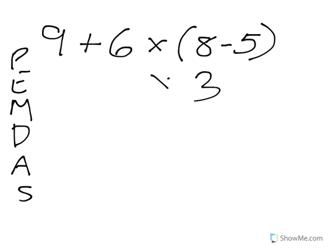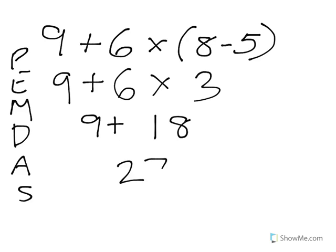So now we have 9 plus 6 times 3. Our checklist tells us to multiply next. So 6 times 3 is 18 plus the 9. 9 plus 18 gives us 27. So our answer there is 27.